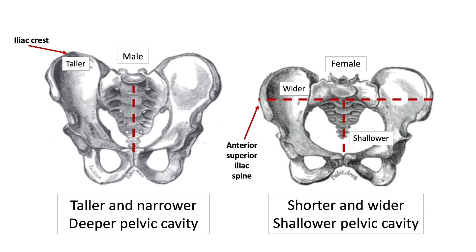First and foremost, the male and female pelvis differ in shape. The male pelvis is higher and narrower than the female pelvis. You can see the iliac crest is much higher in the male pelvis. In the female pelvis, the distance between the anterior superior iliac spines is much greater, which makes the female pelvis shorter and wider.